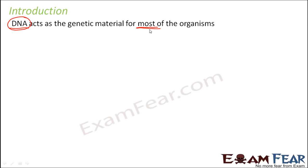DNA is the one responsible for all this inheritance, but it did not come in the dream of any scientist. A lot of research was done to find out which molecule is actually the genetic material, and we will study how scientists came up with the fact that DNA acts as the genetic material. Then we will look at how DNA actually transfers traits from one generation to the next.